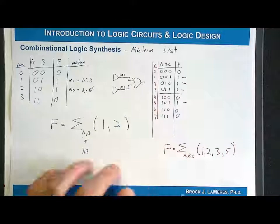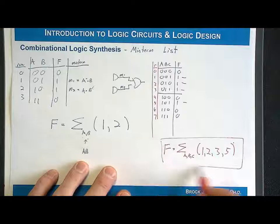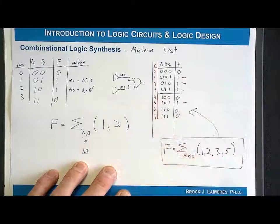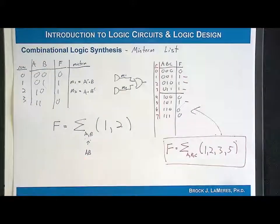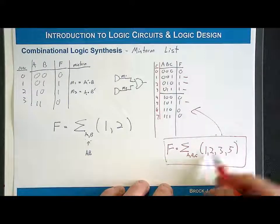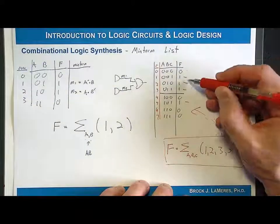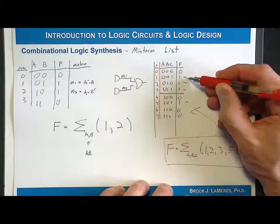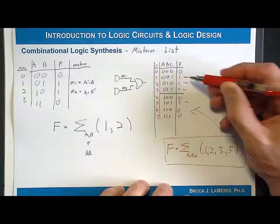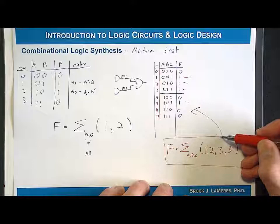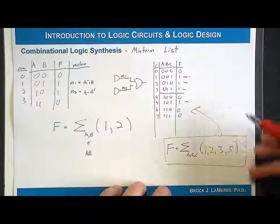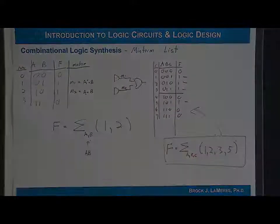This is the exact same information as the truth table. A minterm list is a very compact way. It's called a minterm list because it corresponds to an output of 1, and minterms also correspond to an output of 1. This makes it simple to go from a minterm list directly into a canonical sum of products logic expression, and then a logic diagram.